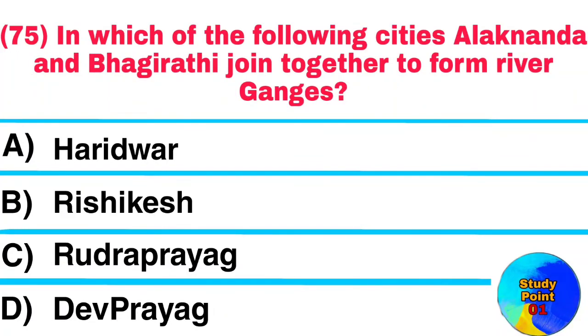Question No. 75. In which of the following cities do Alaknanda and Bhagirathi join together to form River Ganges? Answer: Dev Prayag.